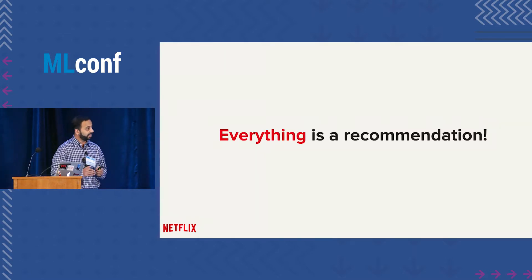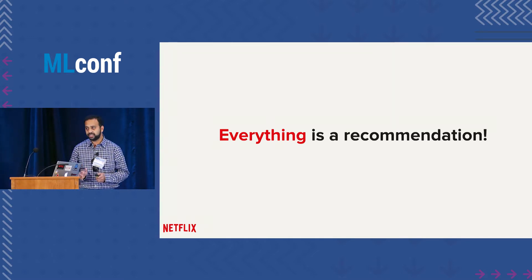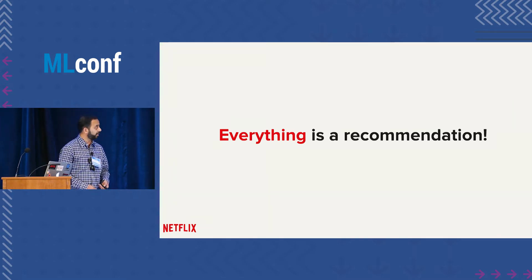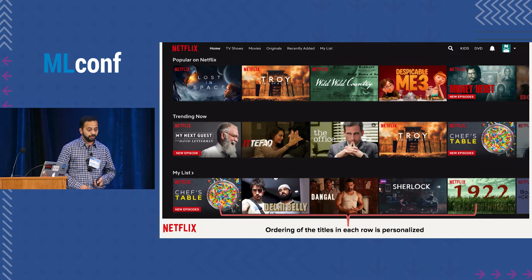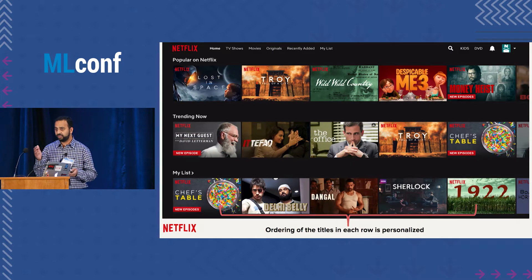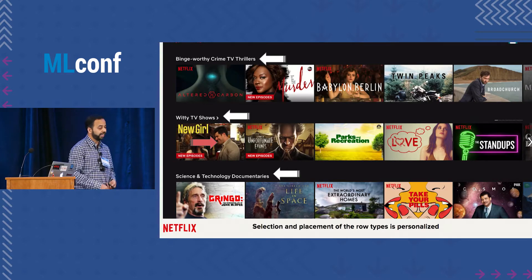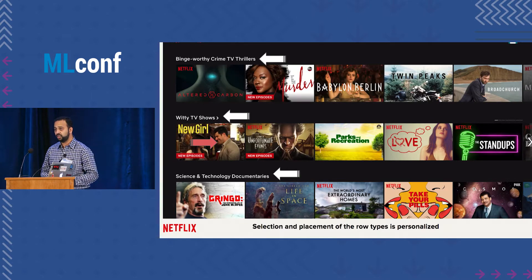At Netflix, almost everything is recommendation. We value personalization quite a lot, so much so that almost every aspect of our product is personalized for our members. For example, the ordering of TVs and movies in the rows that you see is personalized for you. The construction of the homepage — that is, the selection of the rows you see — is also personalized for you.